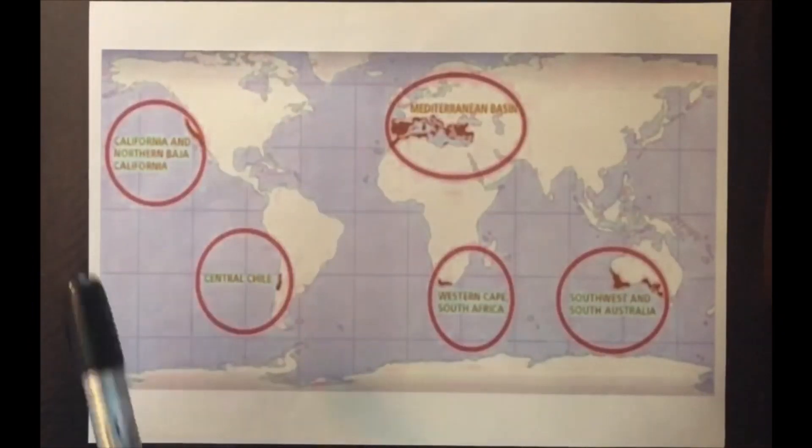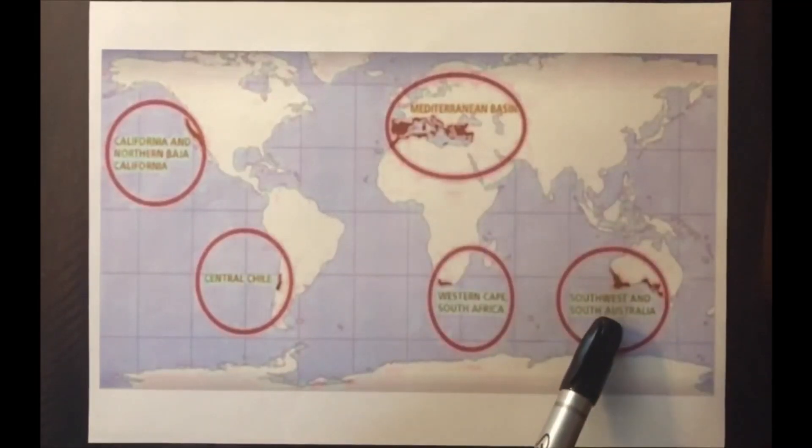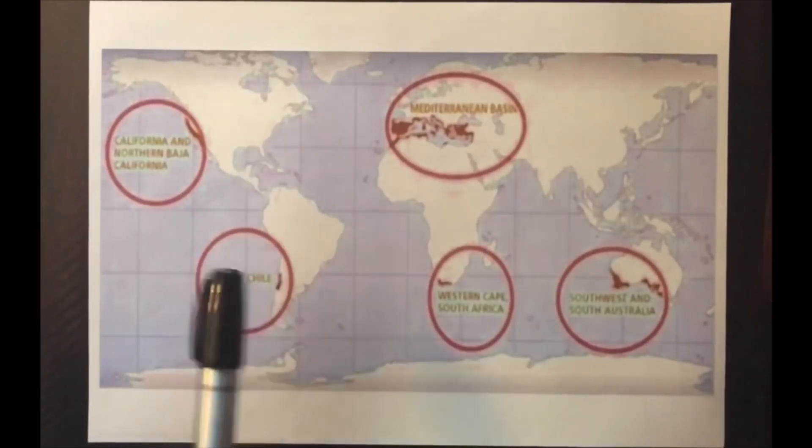Chaparral are located on the coast of California, the coast of the Mediterranean Sea, in western and southern Australia, the Chilean coast, and in South America and South Africa.